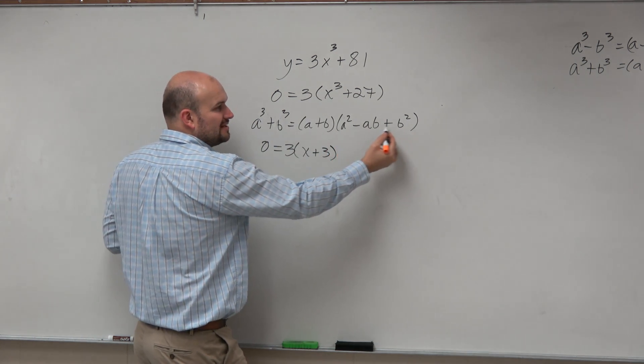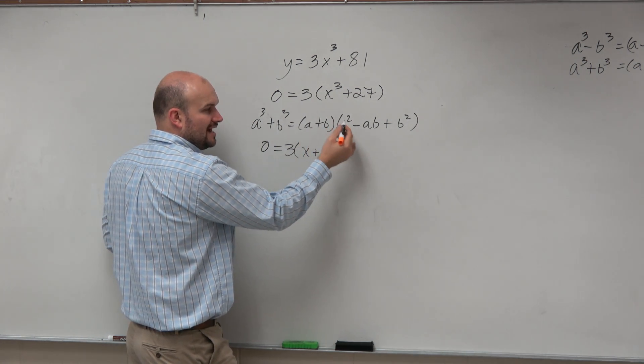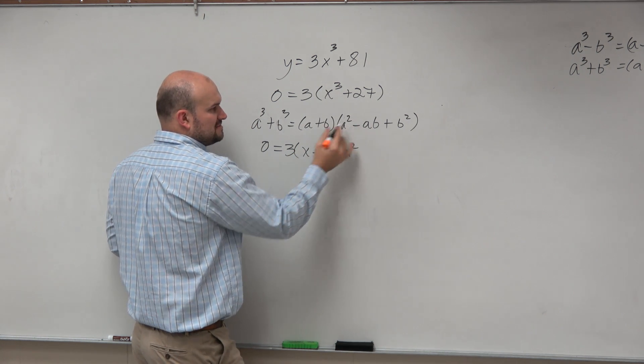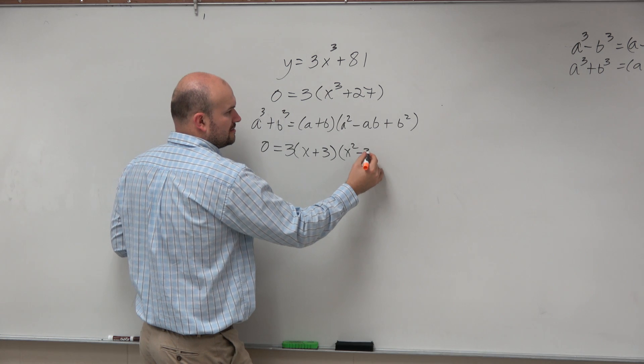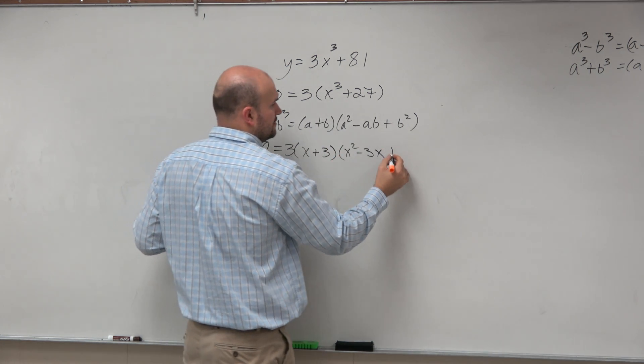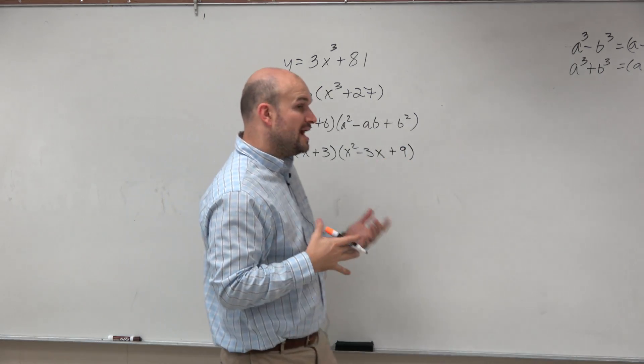Now I can plug that. Now I just got to figure out, so if I know a and b, I got to figure out what a squared, or x squared is, a times b, which is really 3 times x, and then b squared, which is really 3 squared.